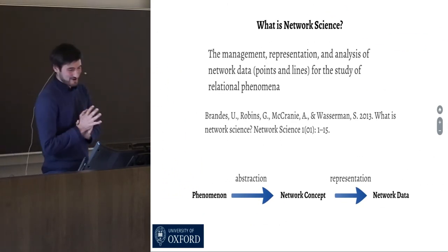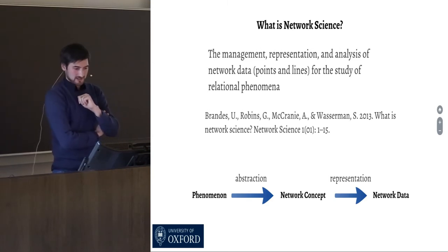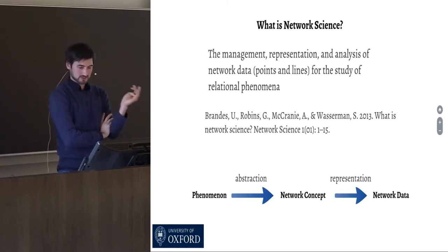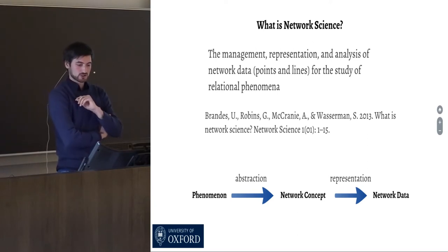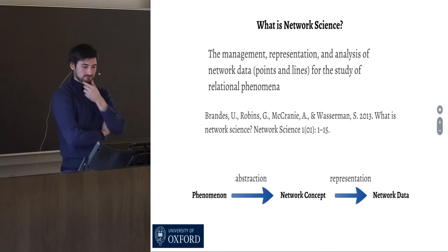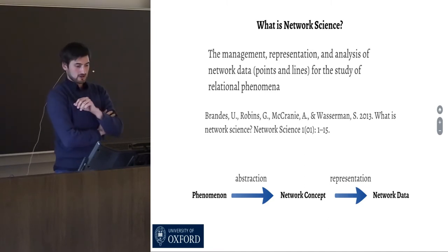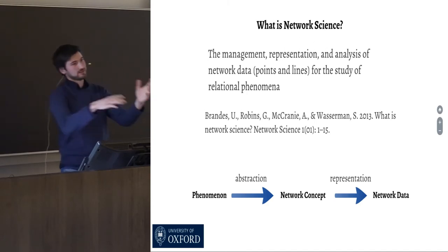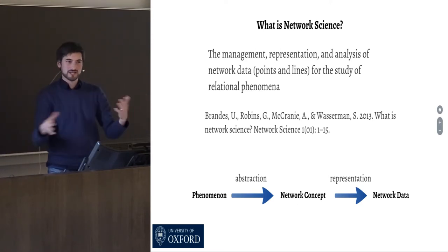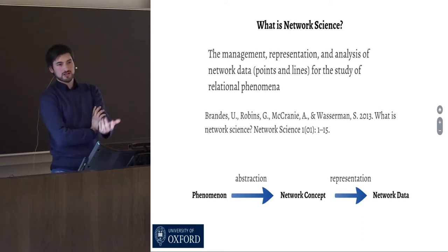Here comes the actual argument. Network science is the management, representation, and analysis of network data — points and lines — for the study of relational phenomena. That's a definition by Ulrich Brandes and colleagues in the first issue of the journal Network Science. It's a very formal definition considering a body of techniques that enables you to deal with network data in order to study relational phenomena.